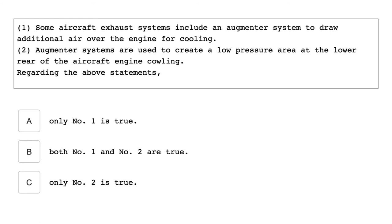One, some aircraft exhaust systems include an augmenter system to draw additional air over the engine for cooling. Two, augmenter systems are used to create a low-pressure area at the lower rear of an aircraft engine cowling. Regarding the above statements, both number one and number two are true.